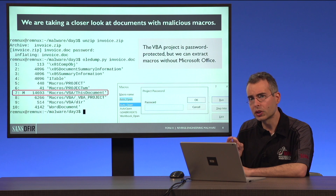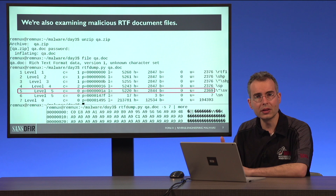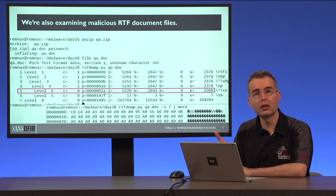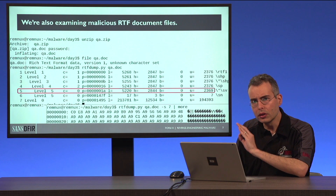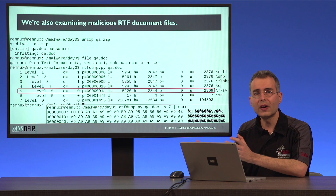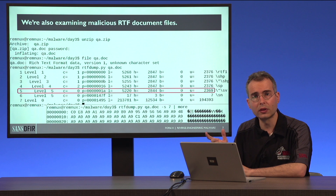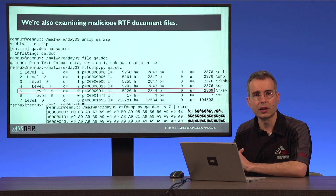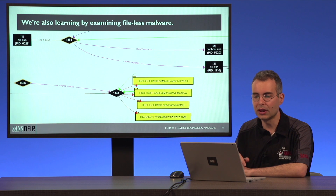We're also spending more time on situations where a Microsoft Office document containing macros might have been password protected. Along these lines, we're taking a closer look at RTF documents, which can also arrive in victims' mailboxes as email attachments. They are used as malicious files and infection vectors, and analyzing them is a bit different from analyzing other Microsoft Office documents. We're now spending more time on tools and examples relevant for dealing with malicious RTF files.